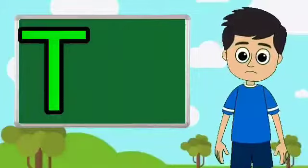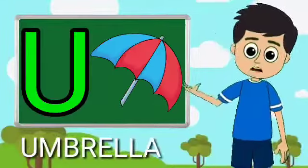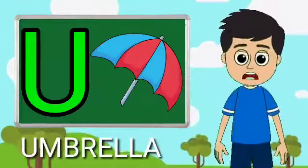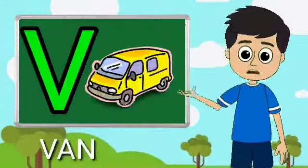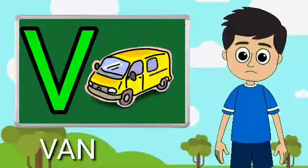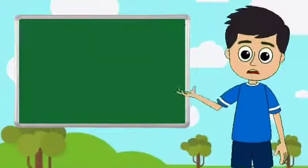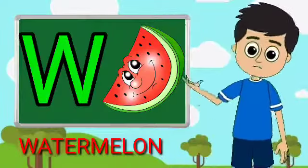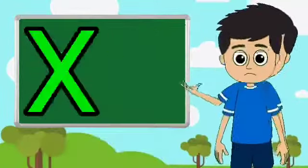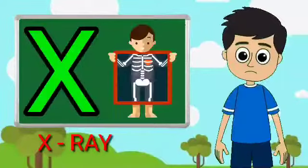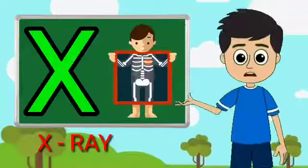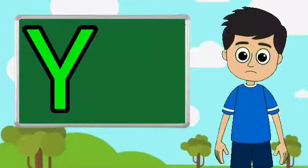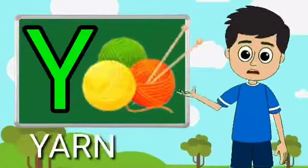U for umbrella, V for van, W for watermelon, X for extra, Y for yarn.